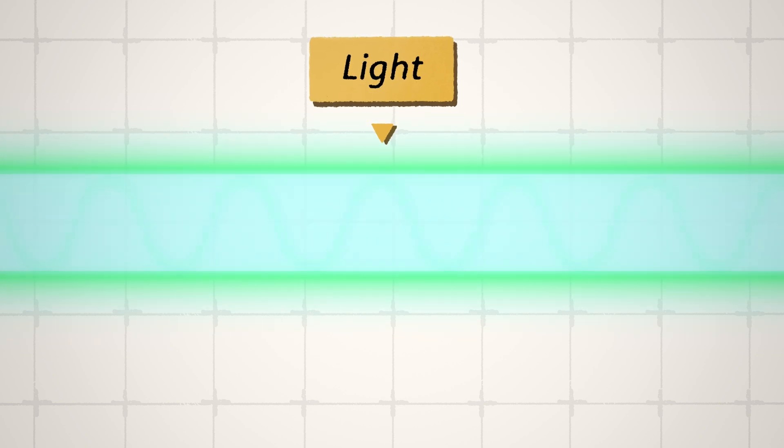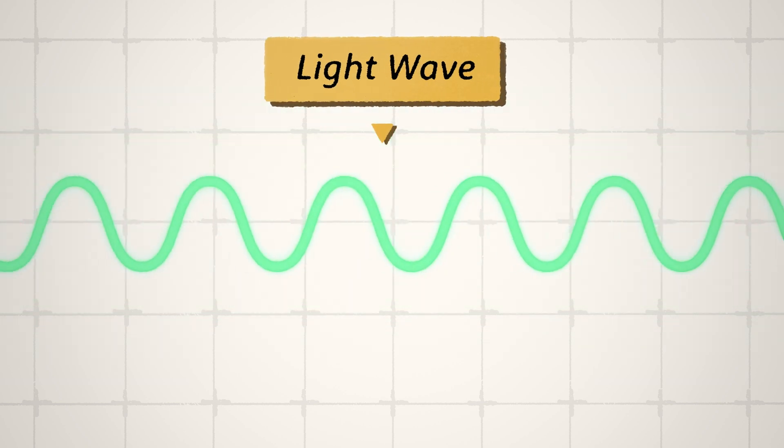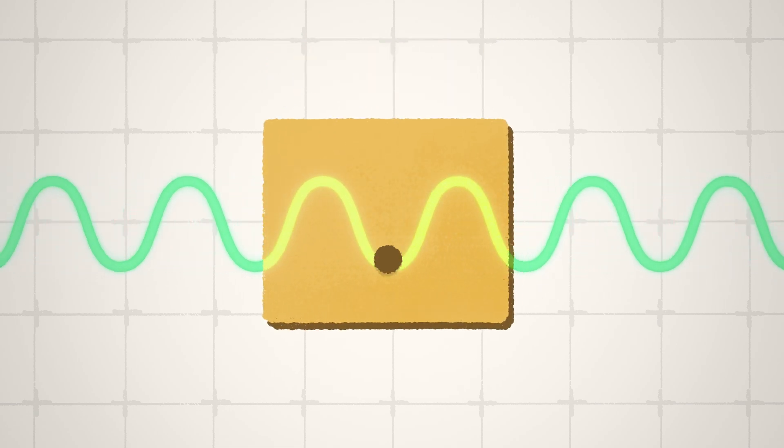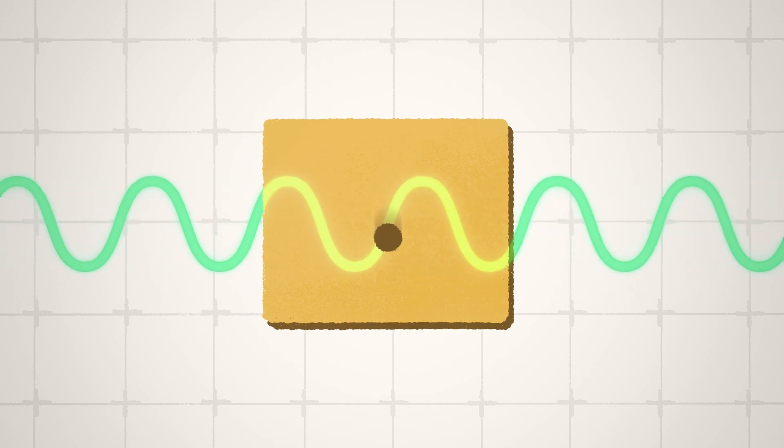Light travels through space in the form of waves that rise and fall at a regular rate. The number of times a wave rises and falls in one second is called its frequency.